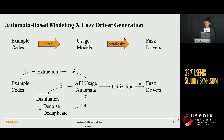Having established the automata-based modeling of control flow structures, our work establishes an automata-guided framework for the learn-and-synthesize process. There are three key components. First, a static analysis-based extraction algorithm extracts usage automata from example programs. These extracted automata are raw and may contain incorrect or duplicate usages. Therefore, we introduce a distillation component to denoise and deduplicate them, and finally merge them into one unified automata using an automata active learning algorithm. Finally, a utilization component uses the learned unified automata to more effectively guide the fuzzing.